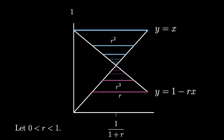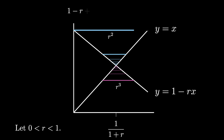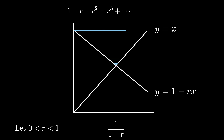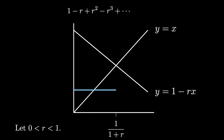We can use the pictured horizontal line segments in an interesting way: the first segment represents 1, then we subtract a segment of length r, add r squared, subtract r cubed, and continue this process indefinitely — each time adding the top lengths and subtracting the bottom lengths. We get a length representation for the infinite alternating sum of powers of r, and this eventual length is exactly the x-distance from the y-axis to the coordinate 1 over 1 plus r. Therefore the infinite sum 1 minus r plus r squared minus r cubed and so on equals 1 over 1 plus r.